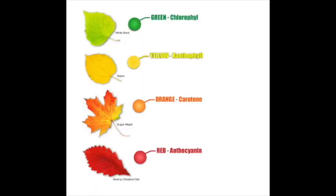In our garden, there are different colors of flowers and plants. These pigments give different colors to the parts of the plant. As we already know, chlorophyll is the green color pigment. Xanthophyll is another pigment that gives yellow color. Carotene is another pigment that gives yellowish-orange color. And anthocyanin gives red color.